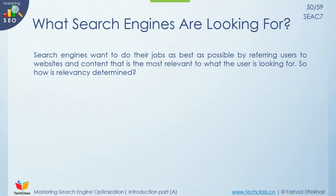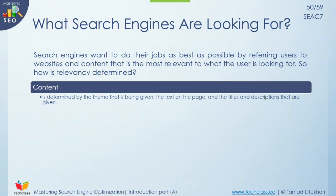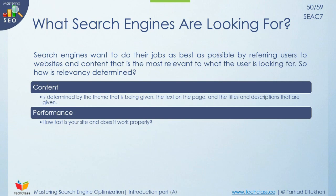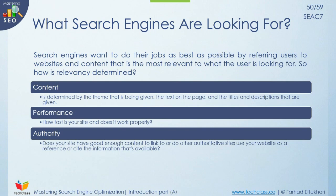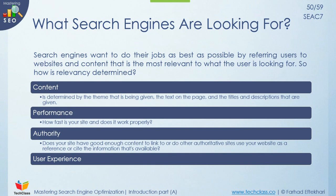Search engines want to do their job as best as possible by referring users to websites and content most relevant to what the user is looking for. Relevancy is determined by: content — the theme, text on the page, and titles and descriptions; performance — how fast your site is and whether it works properly; authority — whether other authoritative sites link to or cite your content; and user experience — how the site looks, whether it's easy to navigate, whether it looks safe, and whether it has a high bounce rate.